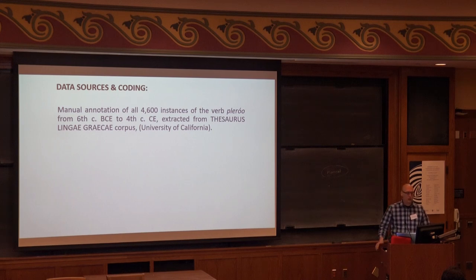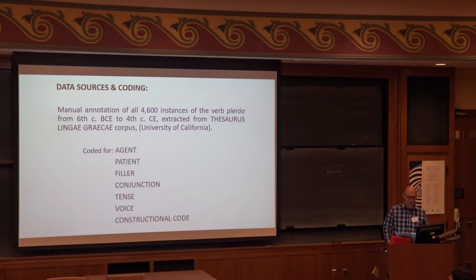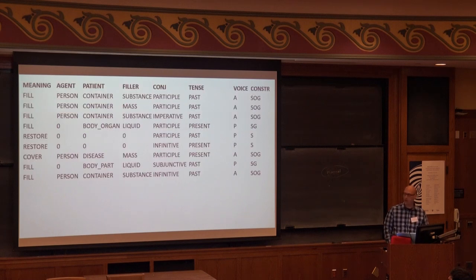My data comes from manual annotation of 4,600 instances of the verb plēroō from 6th century BC to the 4th century CE, extracted from Thesaurus Linguae Graecae Corpus at the University of California. The formal and semantic features I have coded for are the following: agent, patient, filler, conjunction, tense, voice, and constructional code.